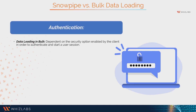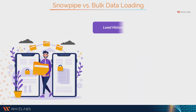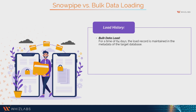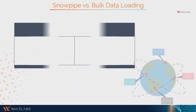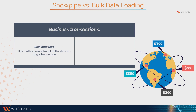Let us understand the difference between Snowpipe and bulk data loading. Authentication: in bulk data loading, authentication is dependent on the security option enabled by the client to authenticate and start a user session, while Snowpipe requires key pair authentication with JSON Web Tokens to call REST endpoints. Load history: in bulk data load, the load record is maintained in the metadata of the target database for 64 days; in Snowpipe, the metadata of the pipe saves the history for 14 days, accessible via a REST API, account usage view, or SQL table function. Transactions: bulk data load executes all data in a single transaction, while in Snowpipe each data file's loading process depends on the amount and size of rows, and partially loaded file rows can be concatenated or separated into single or many transactions.